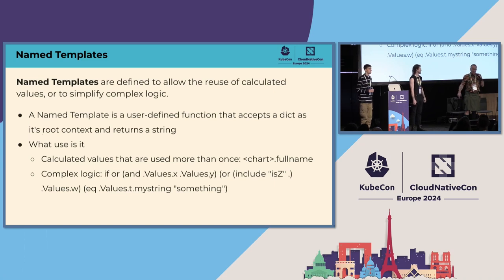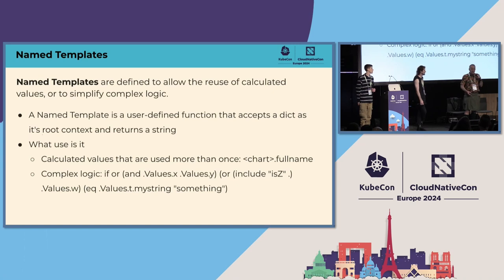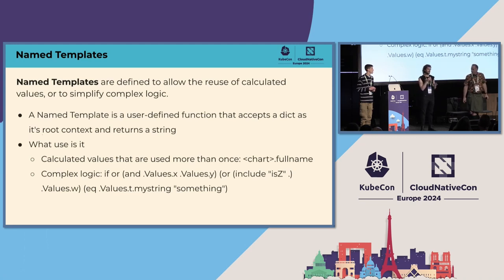Name templates always return a string, but they also accept a dict — so you don't have to pass all your values. You can say 'I want this function to process these three things,' build your dict, and pass it in. It's really powerful if used correctly.